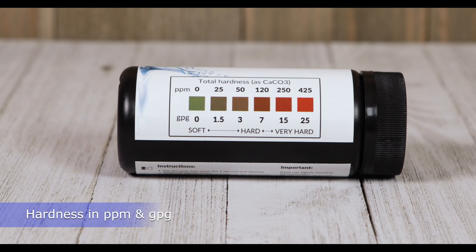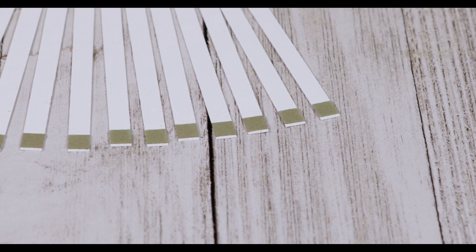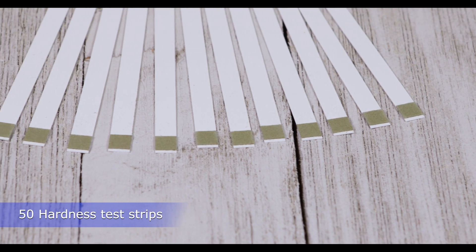The test strips provide water hardness levels in parts per million and grains per gallon. The kit includes 50 water hardness test strips.